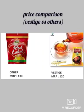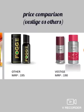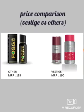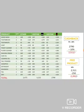Red label: 130 rupees. Zita THC: 122 rupees, 195 rupees. Perfume: 190 rupees.